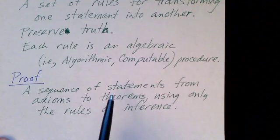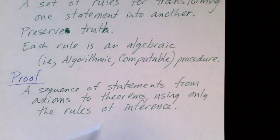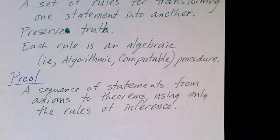And the sequence of statements ends with the theorem that you're trying to prove. Each statement in the sequence is true as well. And so this is what it means to be a proof. And the trick, of course, is to find the proof.